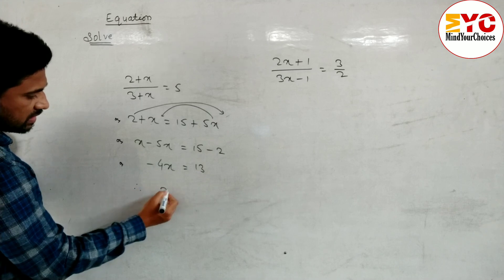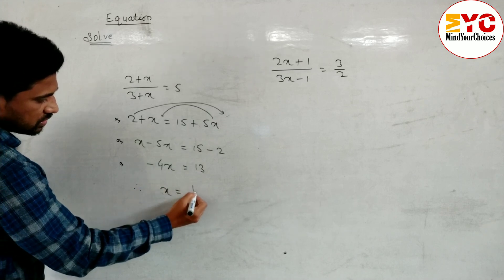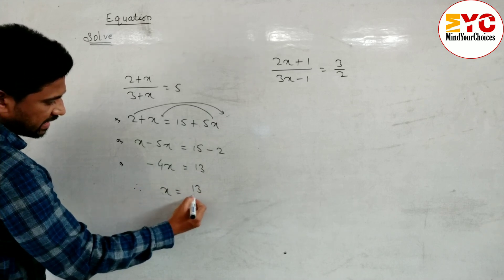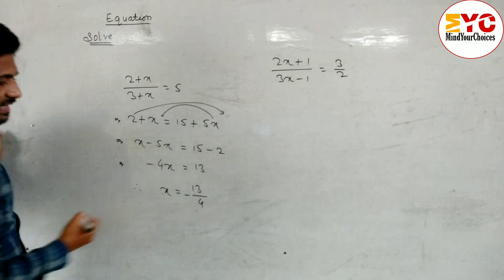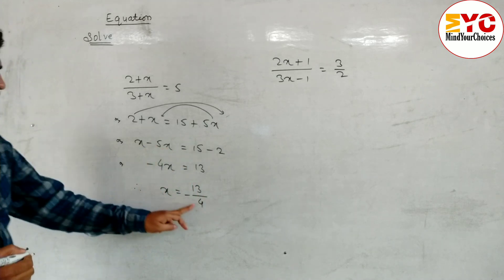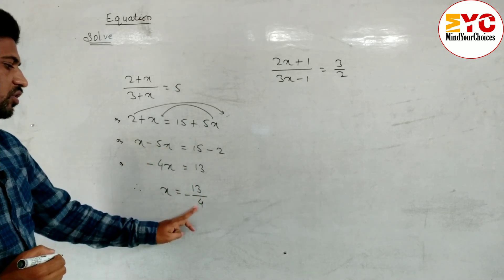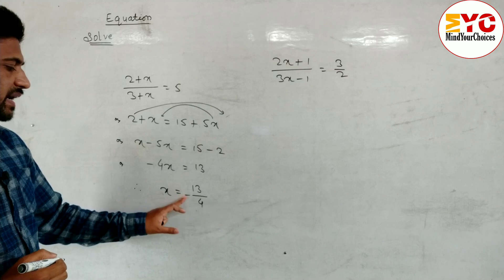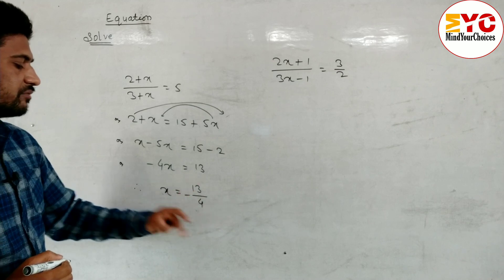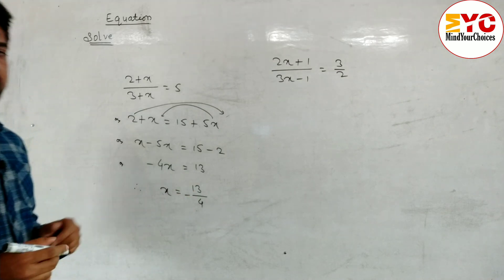Therefore the value of x is equal to 13 by 4 — write here minus, either write minus 13 by 4 or minus 13 by 4. It's the same thing, you can write it either way.